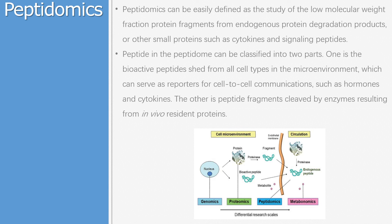Peptides in the peptidome can be classified into two parts. One is the bioactive peptides shed from all cell types in the microenvironment, which can serve as reporters for cell-to-cell communications, such as hormones and cytokines. The other is peptide fragments cleaved by enzymes resulting from in vivo resident proteins.